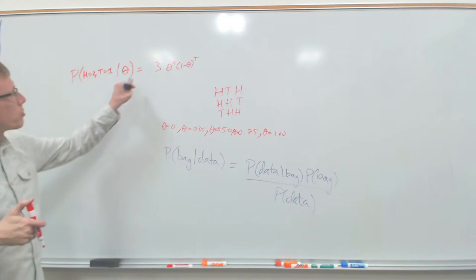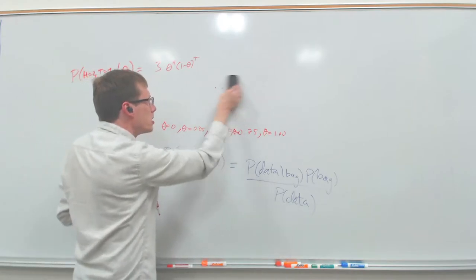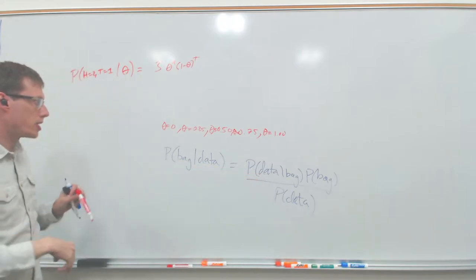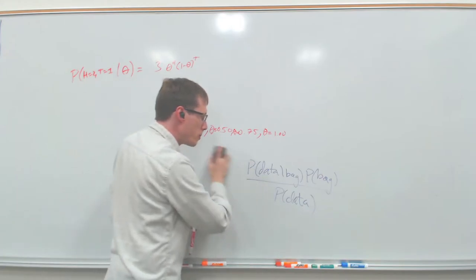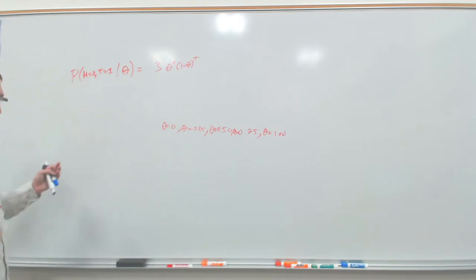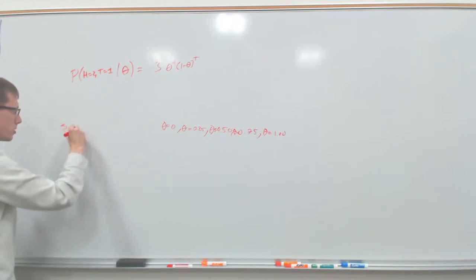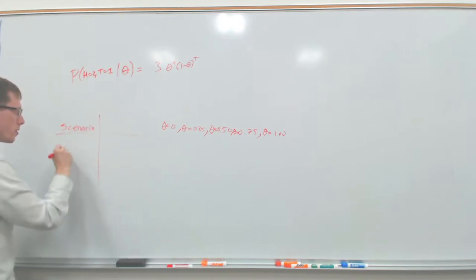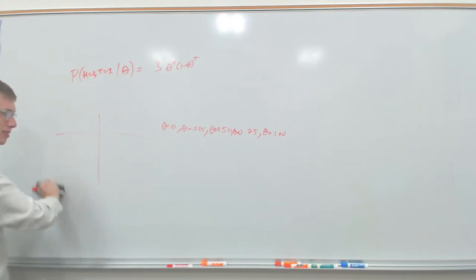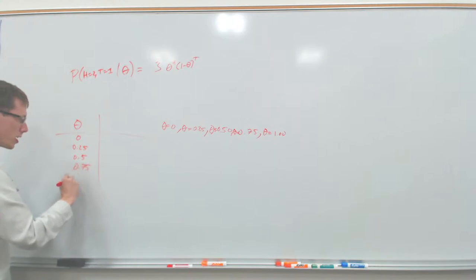In general for n tosses and k heads, the number of orderings is 'n choose k' — the binomial coefficient equal to n! / (k! × (n−k)!). For our case it's 3 choose 2, which equals 3. The full likelihood formula is: P(data | theta) = C(n,k) × theta^k × (1−theta)^(n−k).